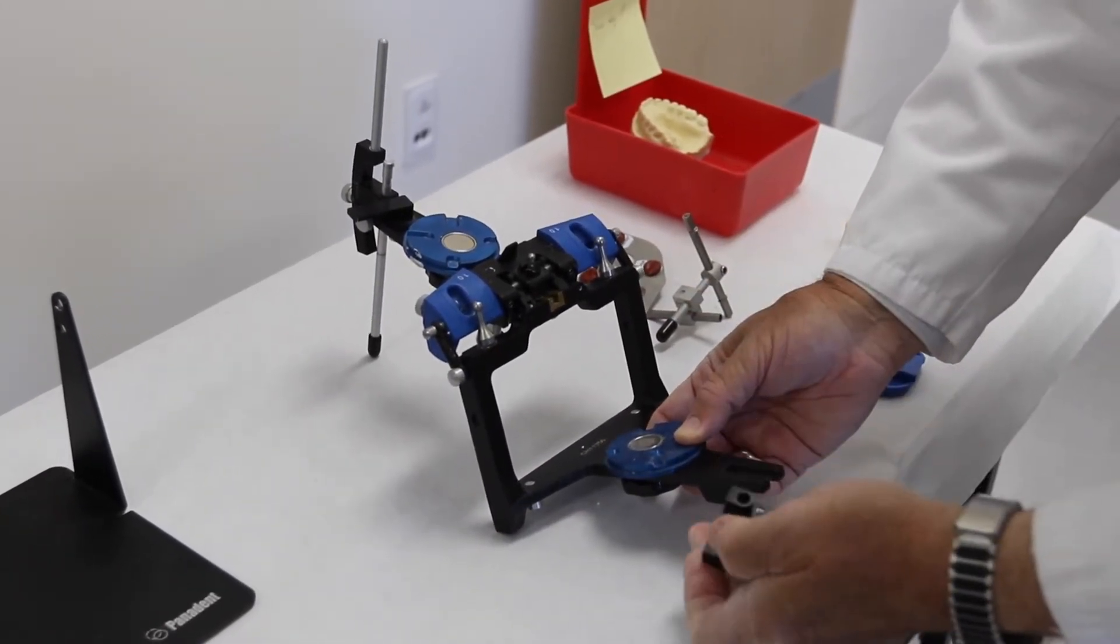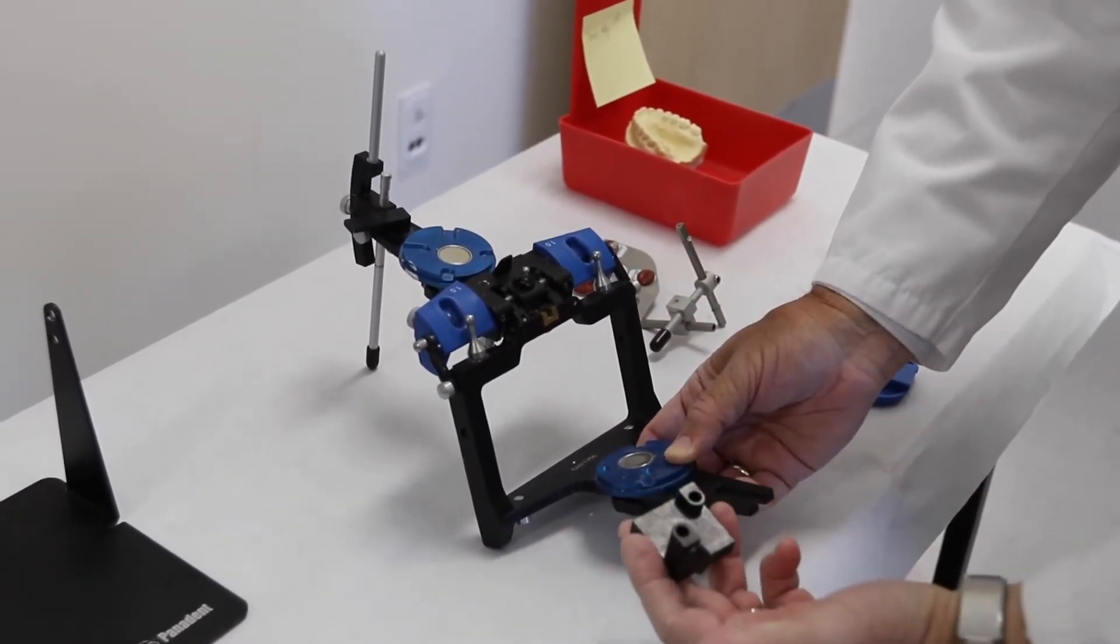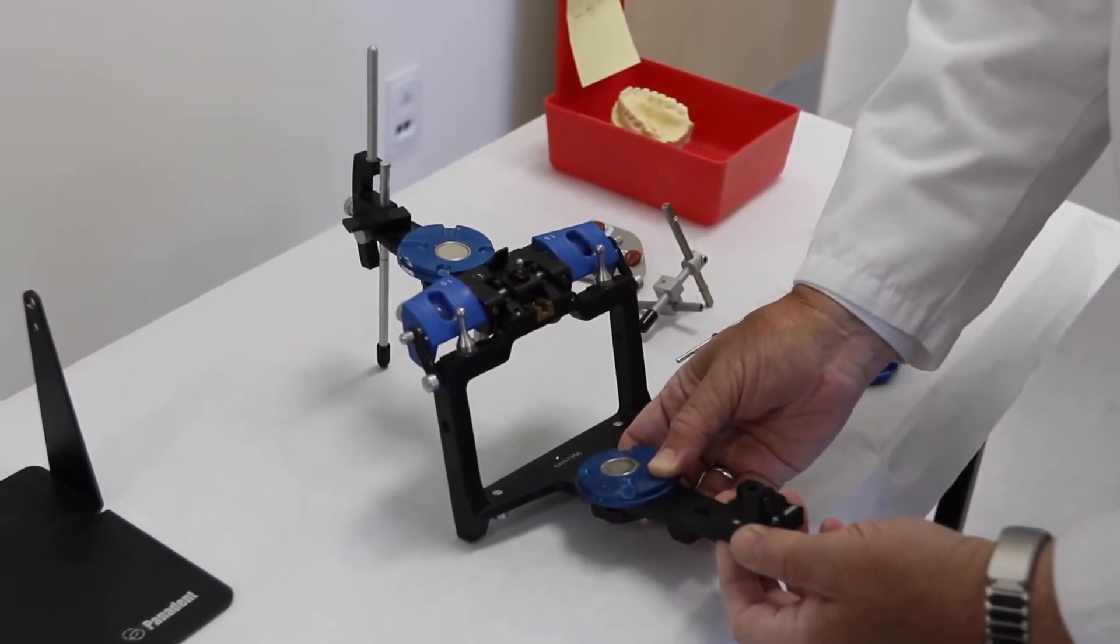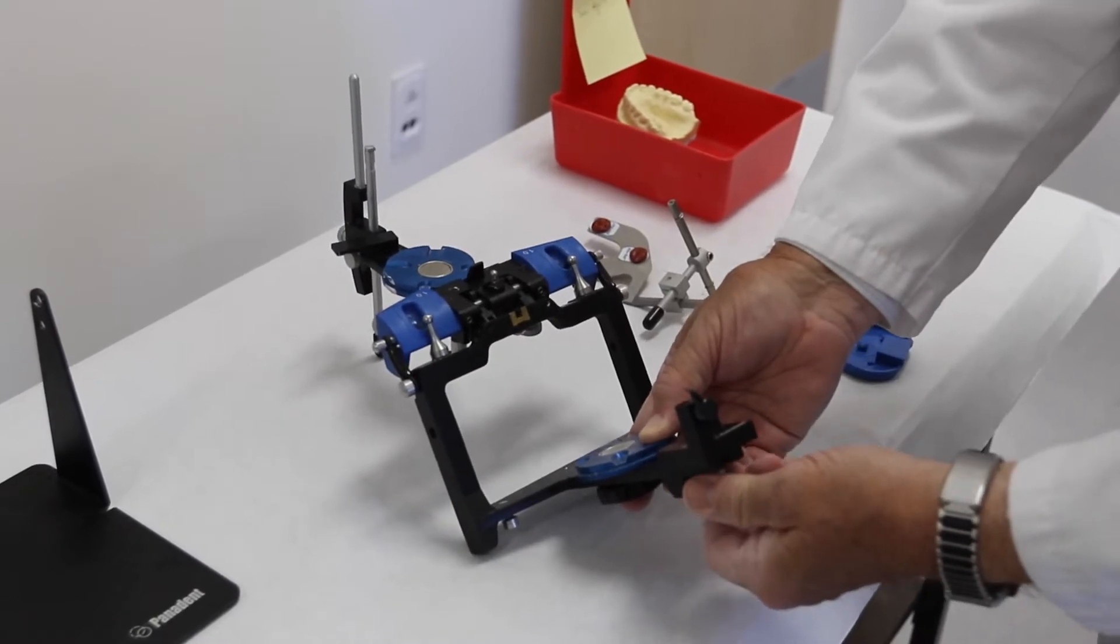Put the fixture in so that Panadent is toward the front of the articulator. It just slides into place and screws down tight.